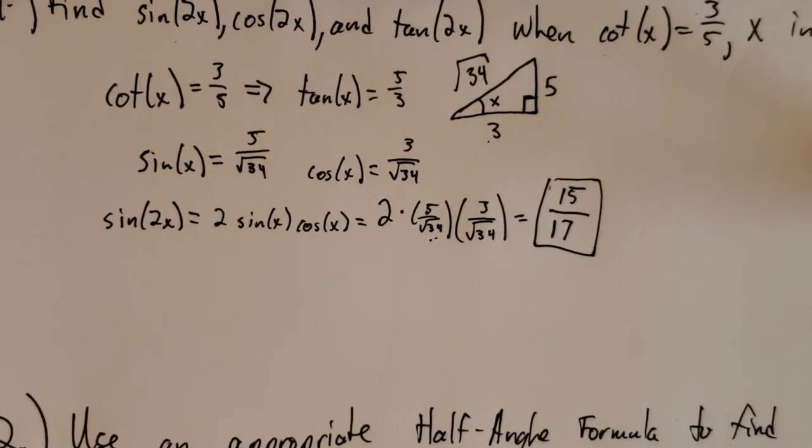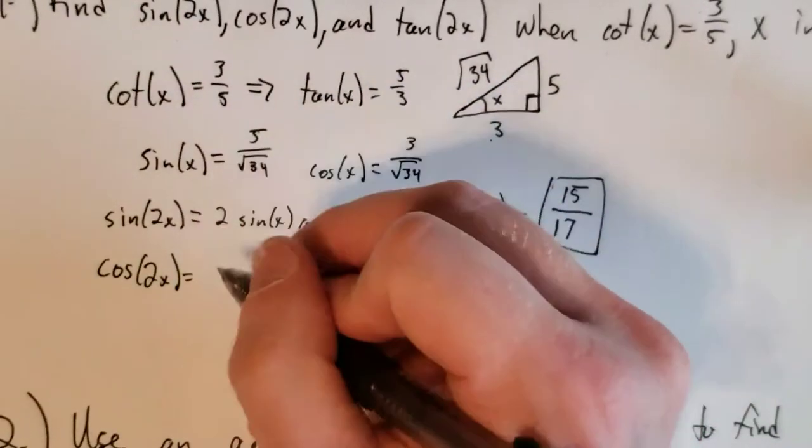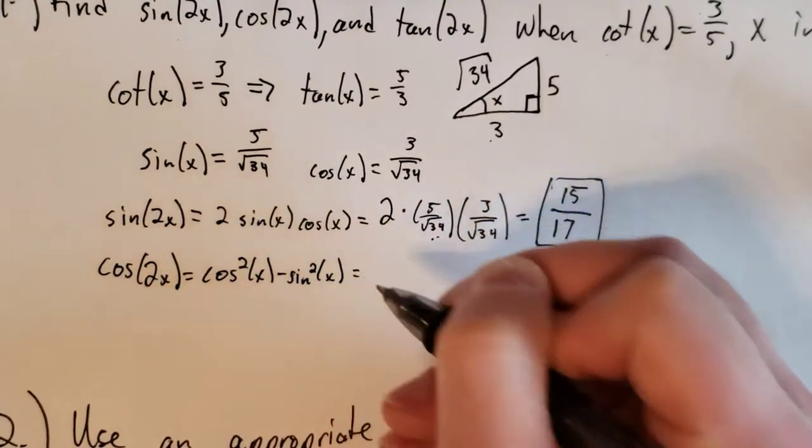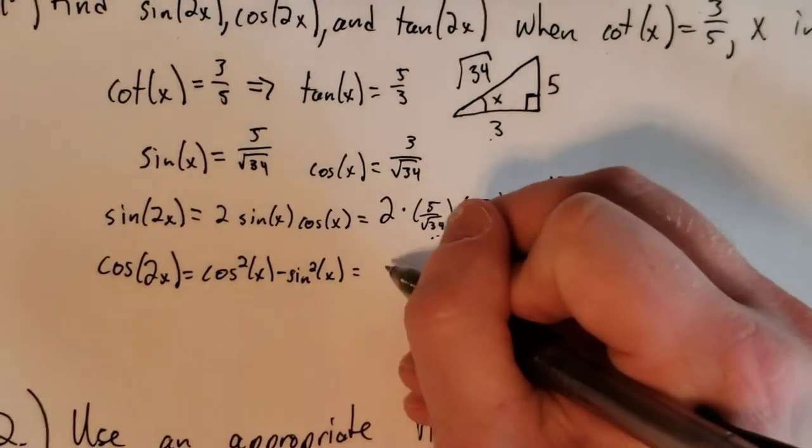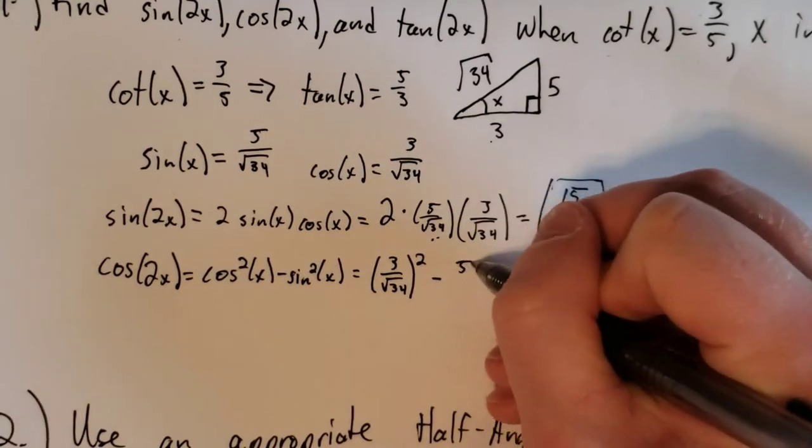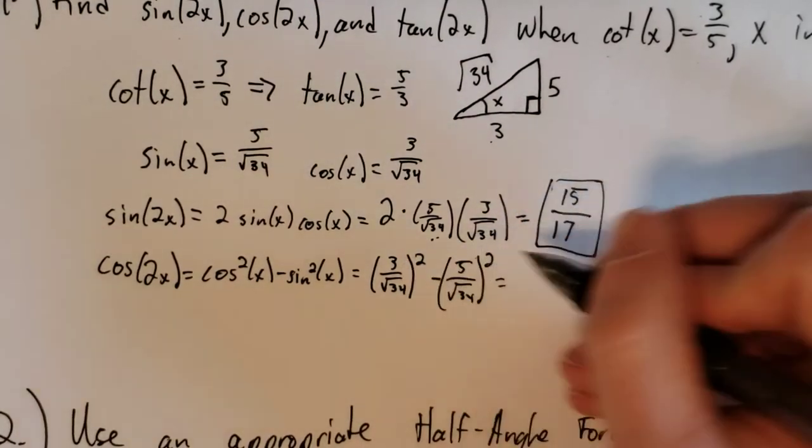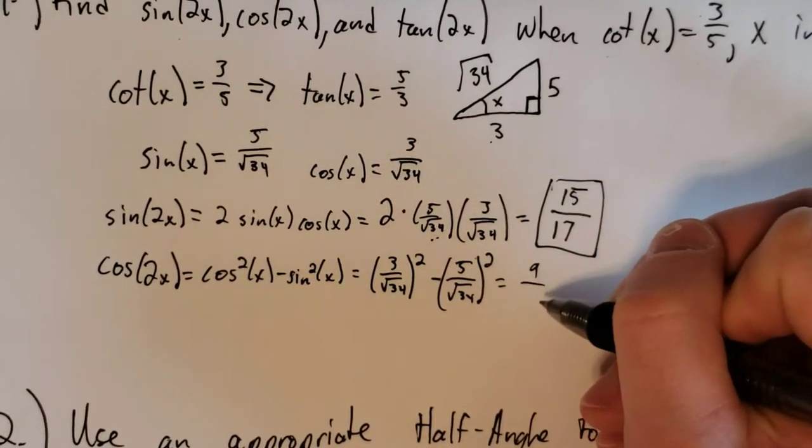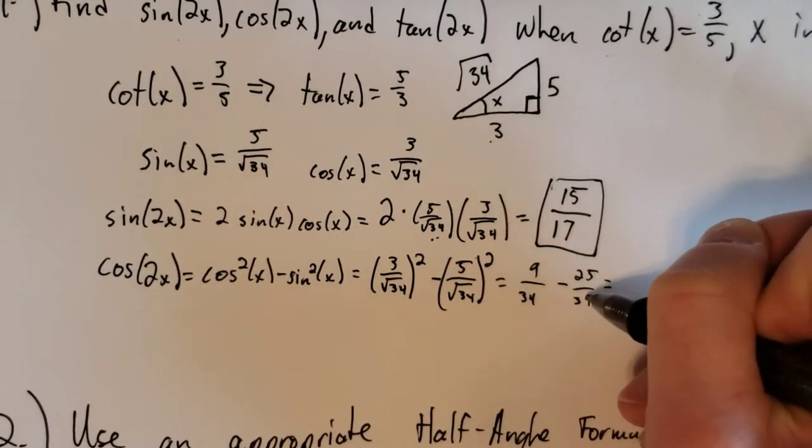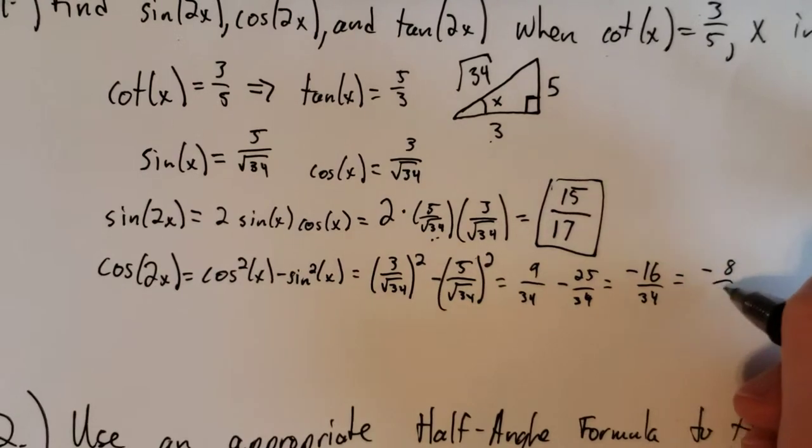We have cosine of 2x next. And this is cosine squared of x minus sine squared of x. Again, this is just a formula you'll find in the book and you should know. And so this is 3 over the square root of 34 squared minus 5 over the square root of 34 squared. So 3 squared is 9, square root of 34 squared is just 34 minus 25 over 34. This reduces to negative 16 over 34, which is negative 8 seventeenths.